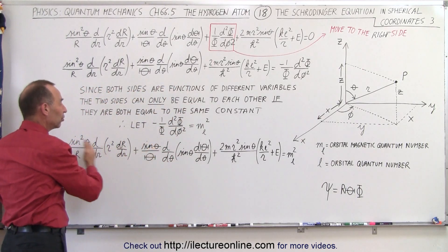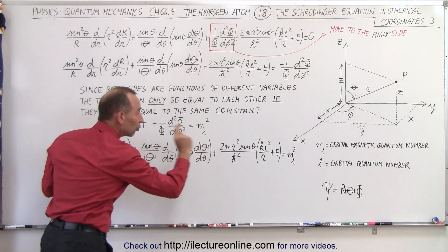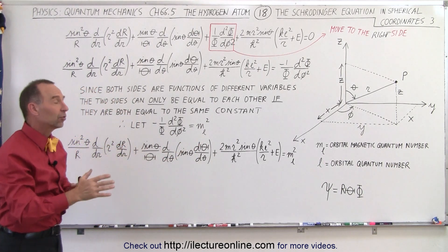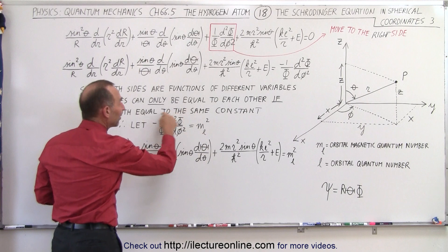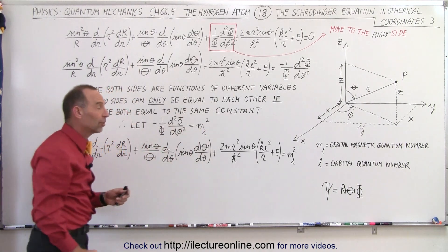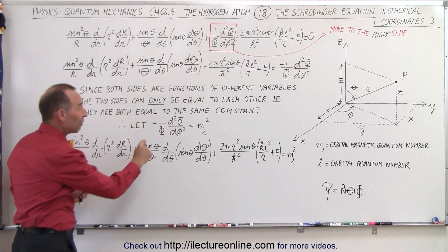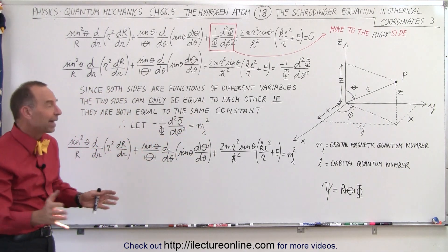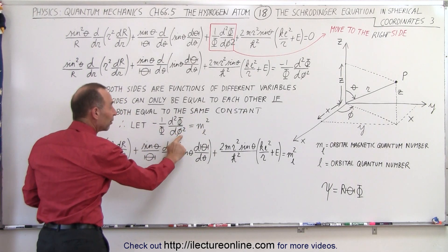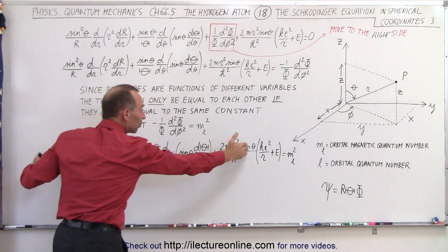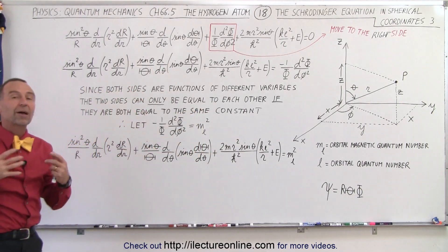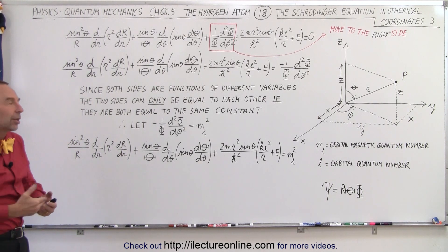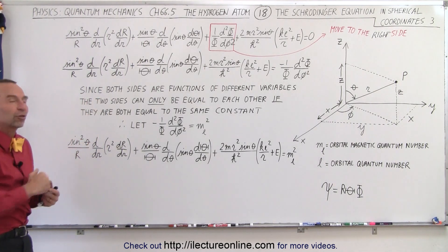And now we have the left side, which is a differential equation containing the two functions R and theta, set equal to M sub L squared constant. So now notice we already have one differential equation here, not particularly in the correct format, that only contains the one variable phi. Now we're going to do the same with the remainder of this equation, somehow separate it and also set it equal to some constant.